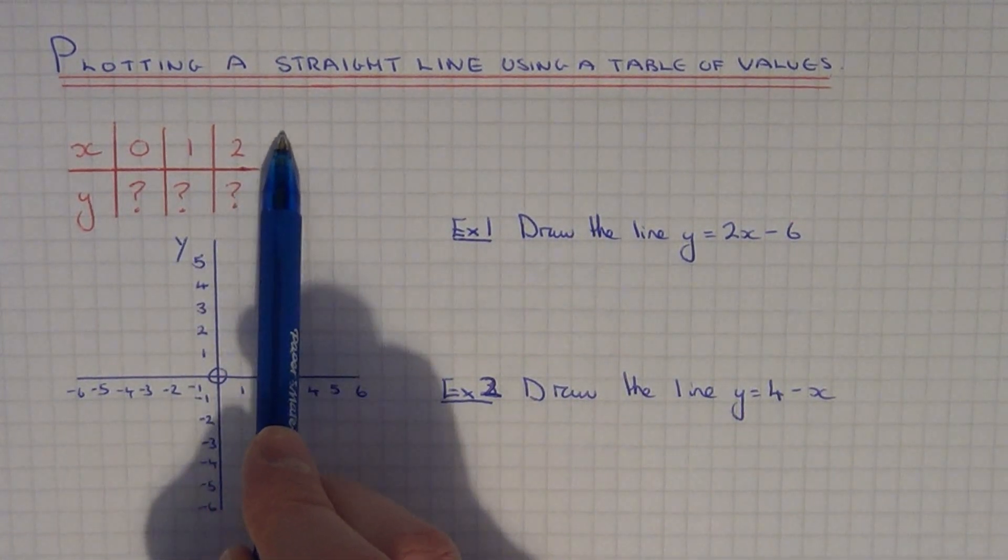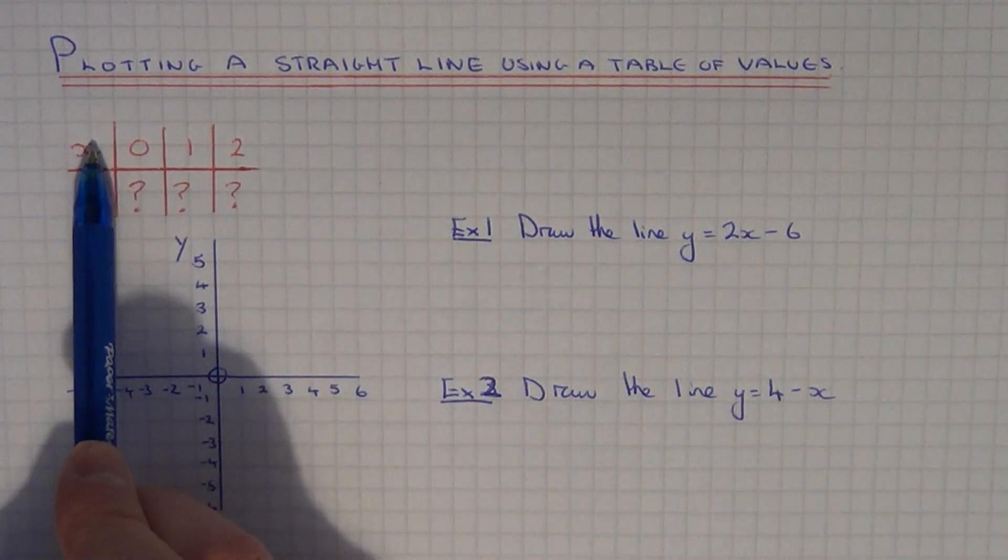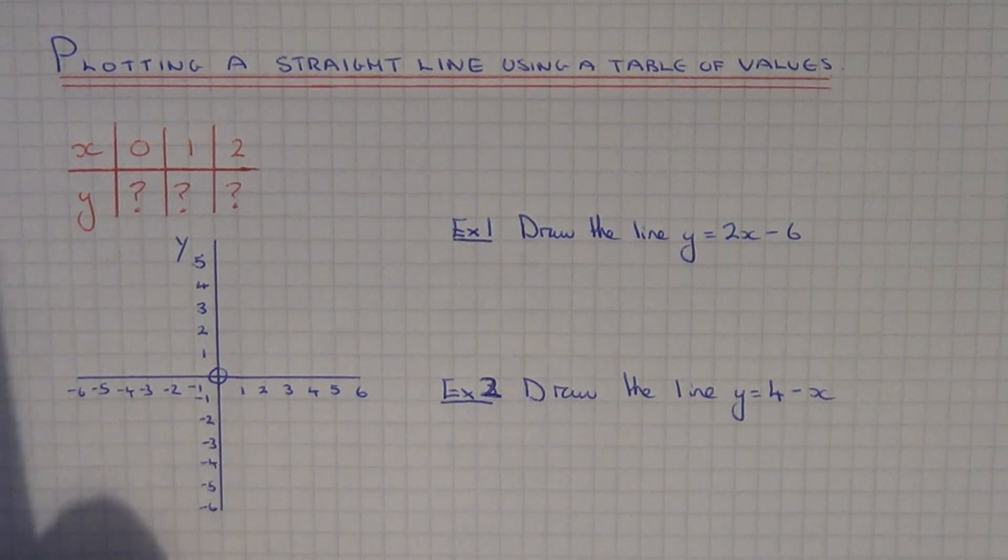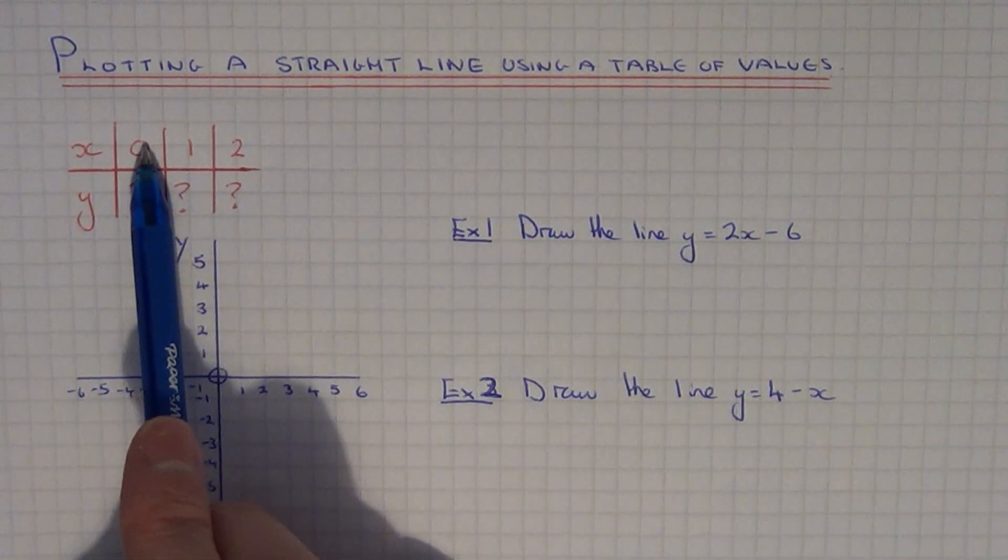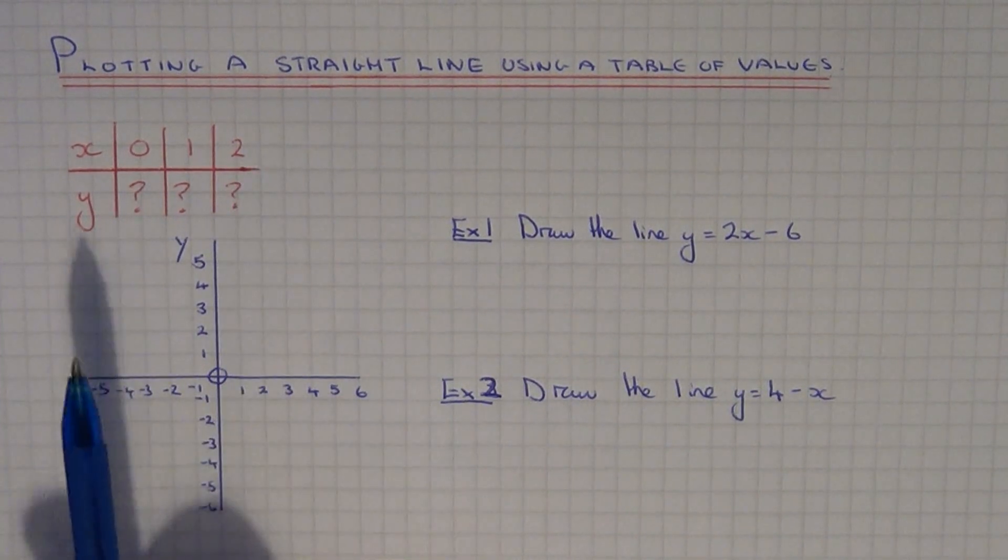You might choose to do other values, so you might choose to go on and do 3, 4, or 5, or even choose some negative values and go minus 1, minus 2, minus 3. But for most lines, 0, 1, and 2 should be enough to give you the whole graph.